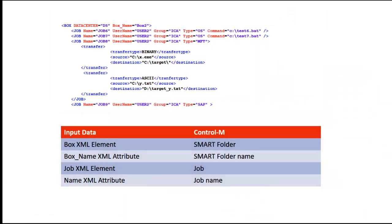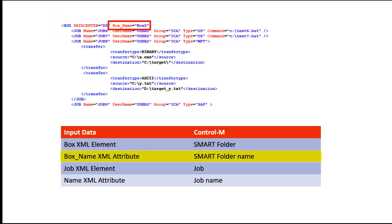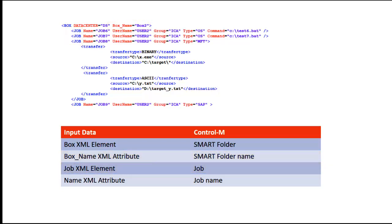In this example, we can see the following. The box XML element will be mapped to a smart folder. The box name XML attribute value will be mapped to a smart folder name. The job XML element will be mapped to a job, and the name attribute value will be mapped to a job name.